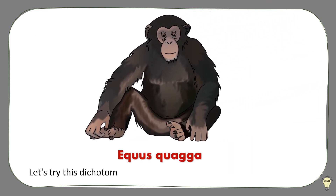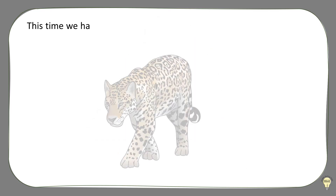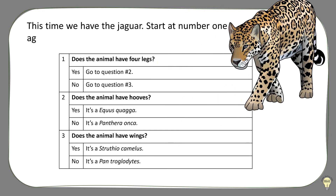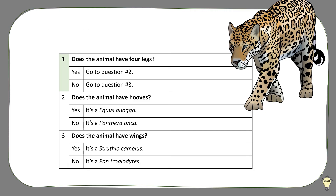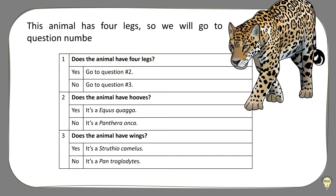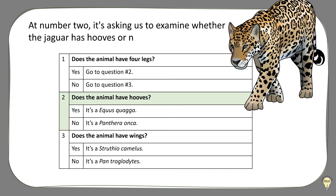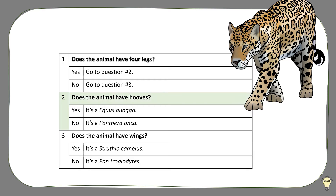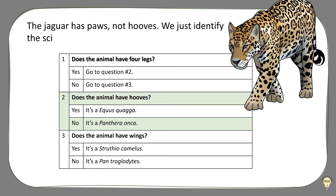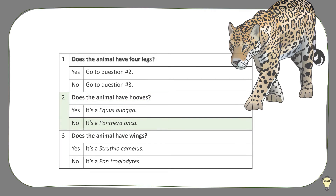Let's try this dichotomous key again with a different animal. This time we have the jaguar. Start at number 1 again to figure its scientific name out. This animal has 4 legs, so we will go to question number 2. At number 2, it's asking us to examine whether the jaguar has hooves or not. The jaguar has paws, not hooves. We just identified the scientific name of this animal too.